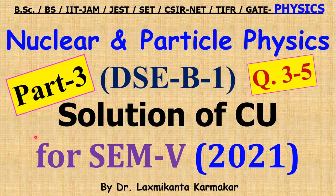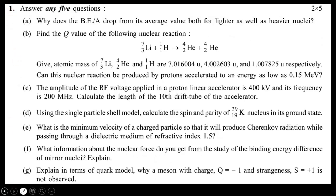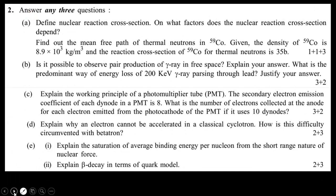Hello, welcome everyone. This is part 3 of the solution of Nuclear and Particle Physics DHCV1 for Semester 5 under University of Calcutta, for the question paper of 2021 on Physics Honours. We already covered two parts on Question 1 and Question 2. Links are given in the description box if you want to watch the previous lectures. This is the question paper — Question 1 and Question 2 were already discussed in the previous two parts.